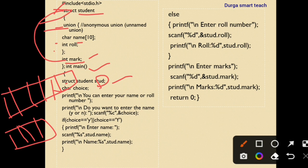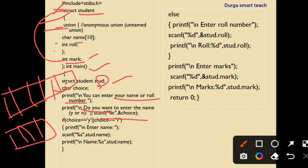We print a message: 'You can enter your name or roll number.' Then we ask 'Do you want to enter the name?' and use scanf with %c to receive the user's choice. If the choice is 'y' or 'Y', the user can enter the name, which will be stored at stud.name.